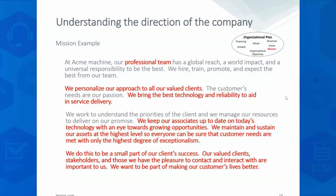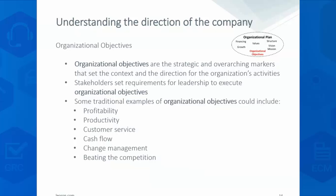Now that I've got my values understood, my vision and mission, I can sit down at an organizational level and express what our organizational objectives are for the year. This is a strategic plan for the organization for the next year — what we're going to do to be successful. It talks about profitability, productivity, customer service, cash flow, change management, and ultimately, beating the competition. These are some examples of organizational objectives.